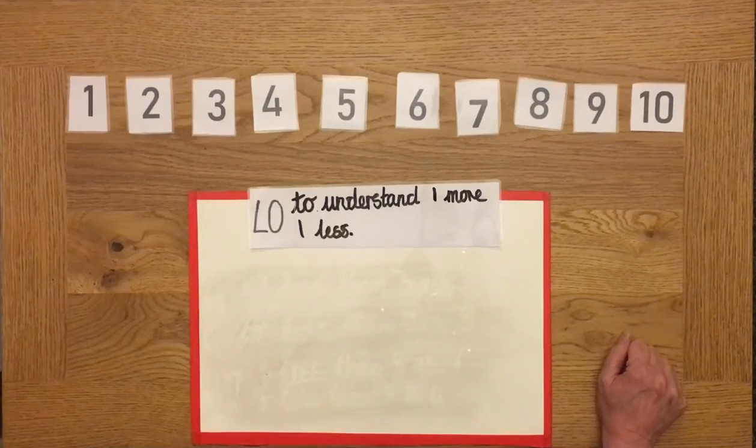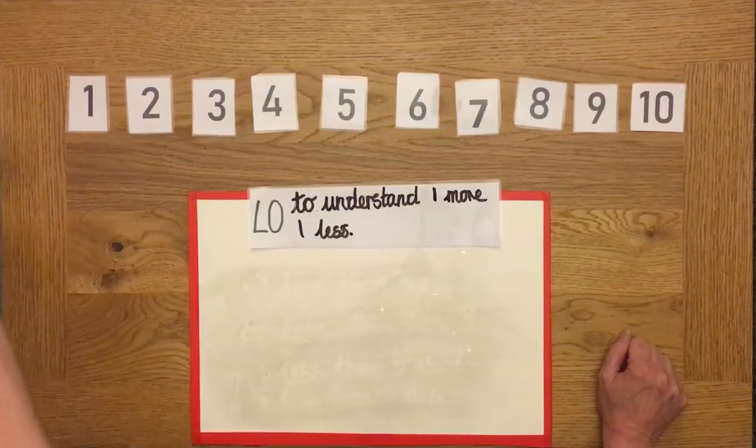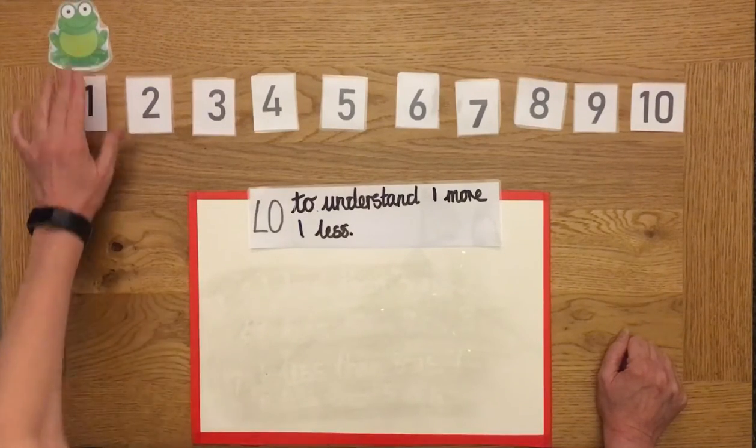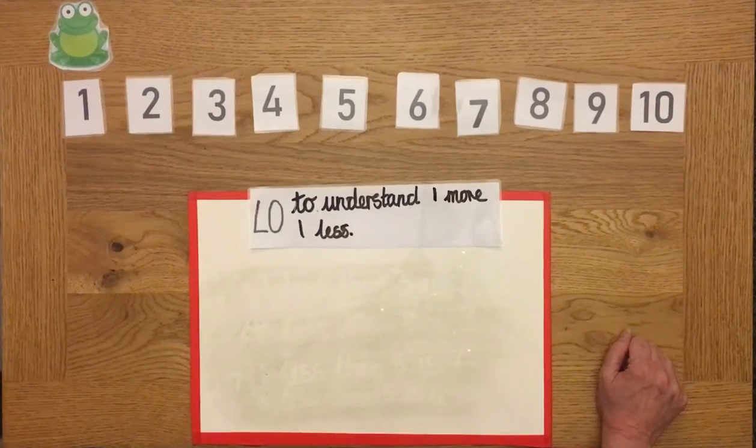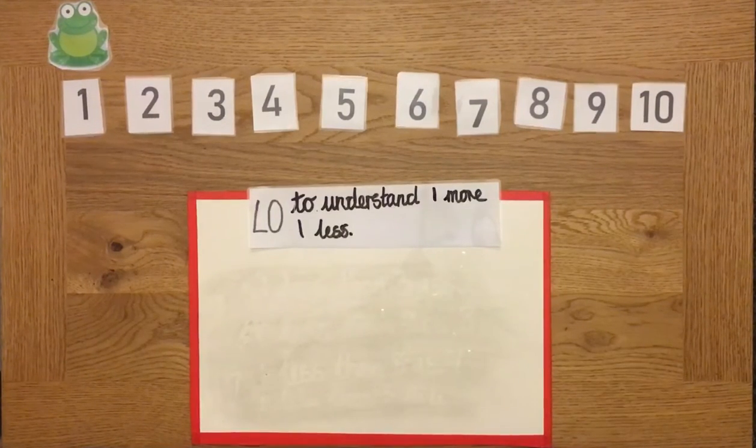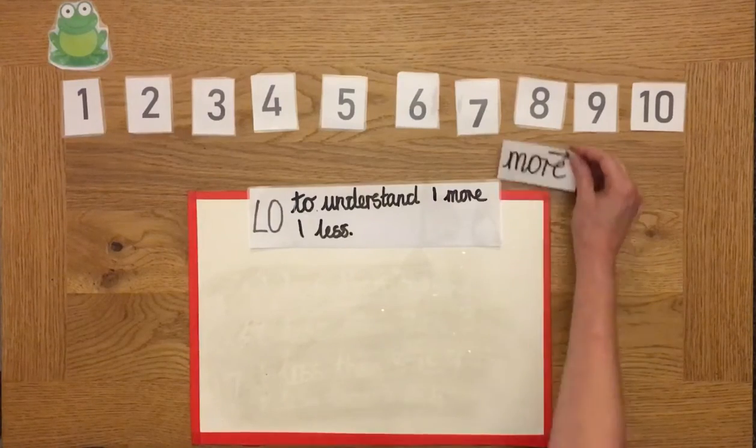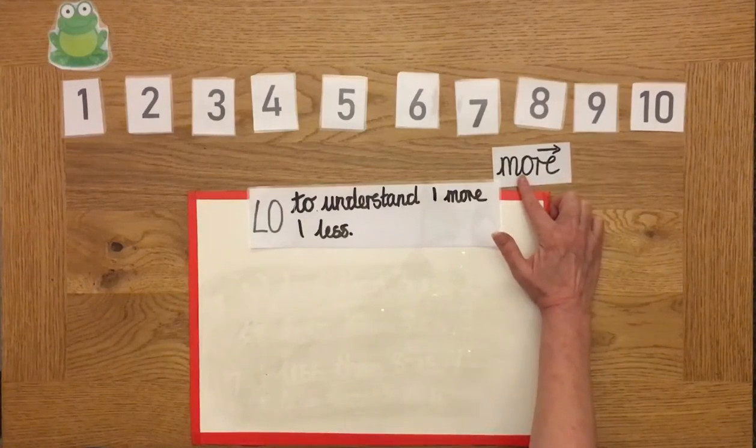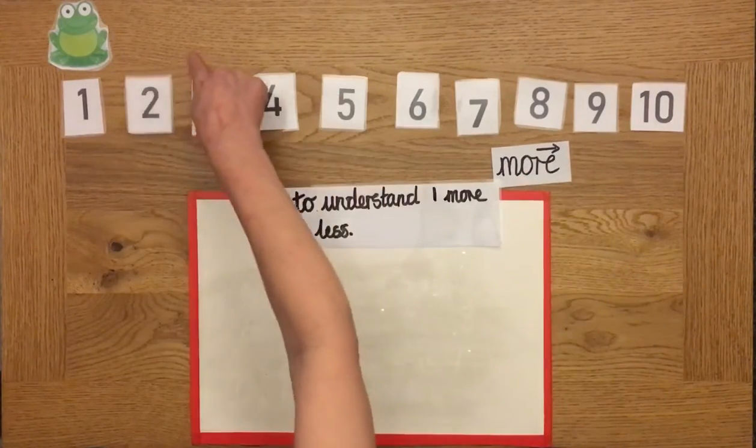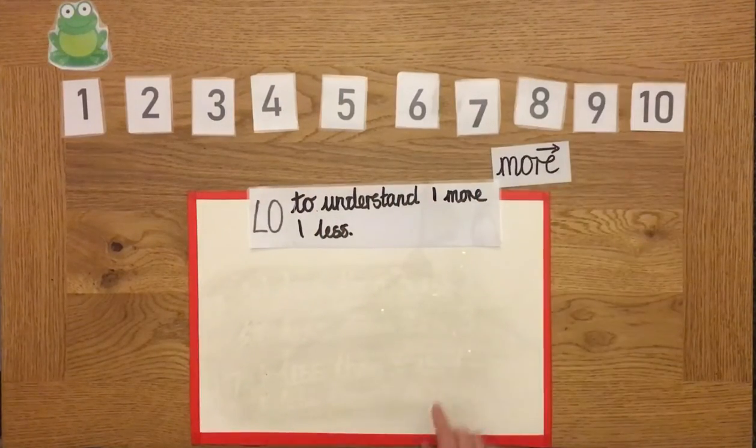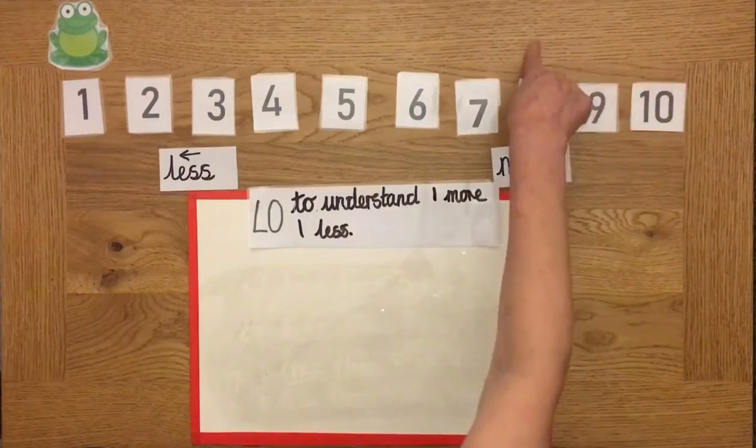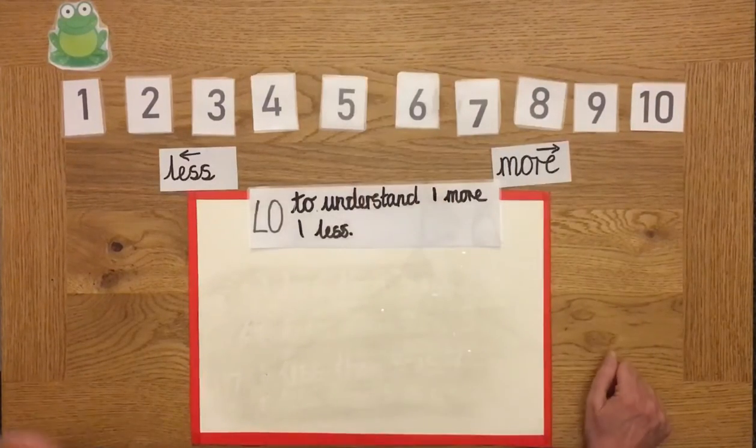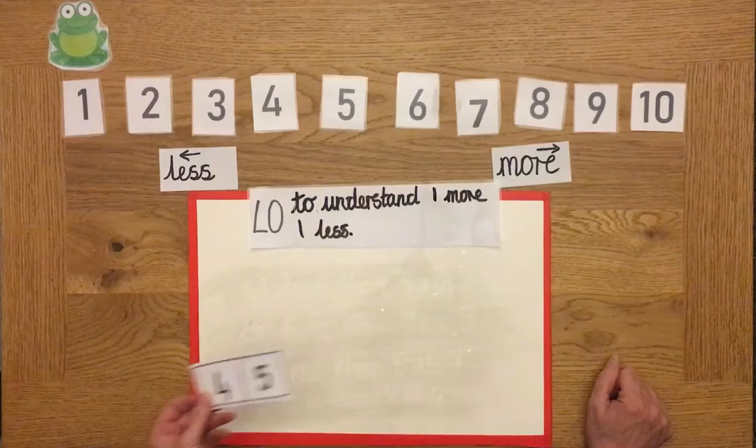We are going to do one more, one less. So we need our little frog who's going to help us jumping on the one more, one less. Now in the last lessons, we learnt that by more, we mean it gets bigger. It jumps this way for more. And for less, it jumps this way.